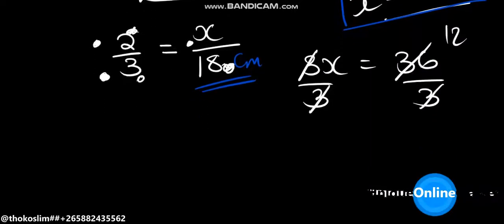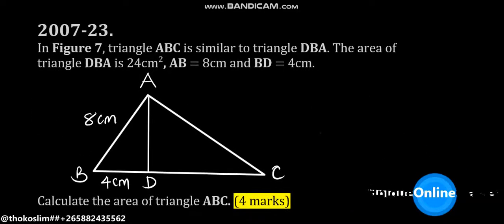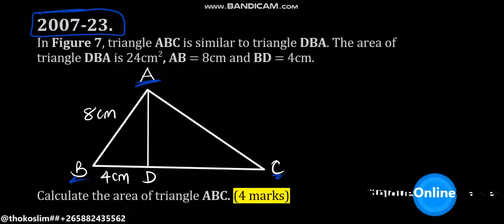Let's now see how we can solve example number 3. This was question number 23 in 2007 — it appeared in figure 7 of that exam paper. Triangle ABC is similar to triangle DBA.